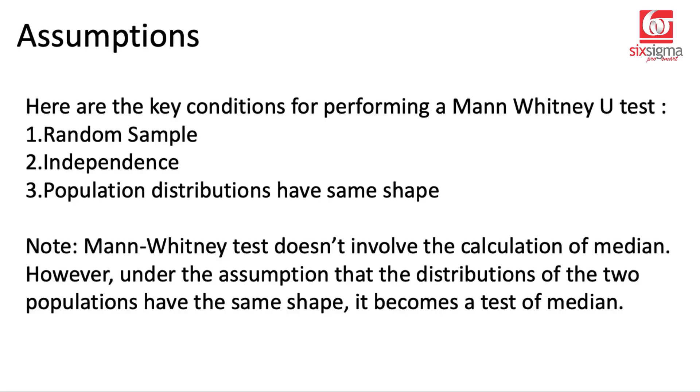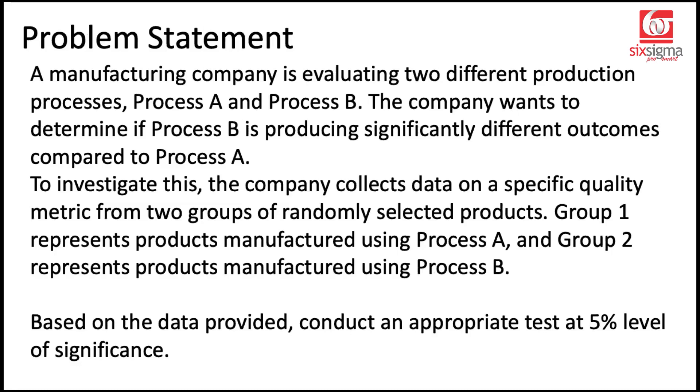Let's dive into a problem and understand it better. A manufacturing company is evaluating two different production processes, Process A and Process B. The company wants to determine if Process B is producing significantly different outcomes compared to Process A. Observe that the problem doesn't say A is greater than B or B is greater than A, only that they are different. So this is a two-tailed test. The company collects data on a specific quality metric from two groups of randomly selected products. Based on the data provided, conduct an appropriate test at 5% level of significance.